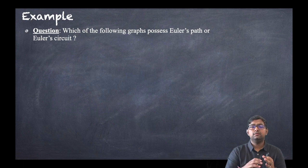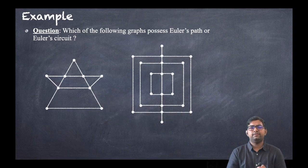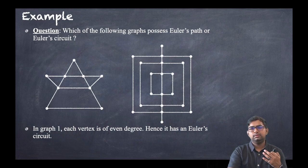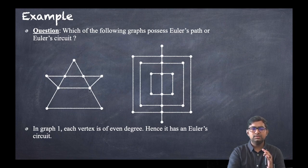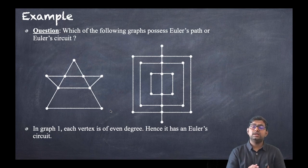The question is: which of the following graphs possesses Euler's path or Euler's circuit? Consider graph one. The degree of each vertex is: two, four, four, and two — all even degrees. Since all vertices are of even degree, it has an Eulerian circuit.